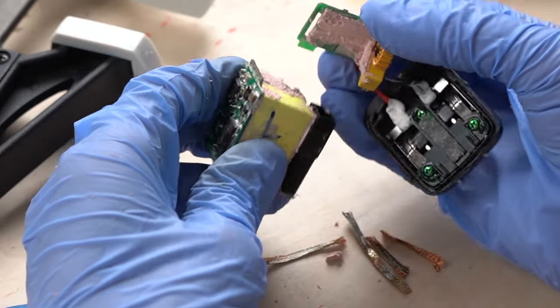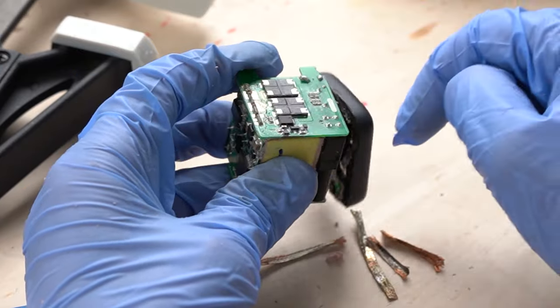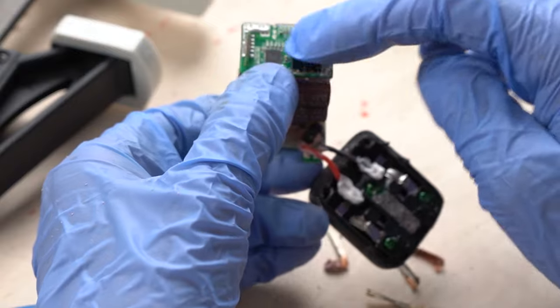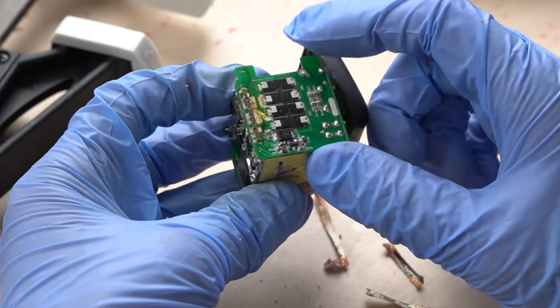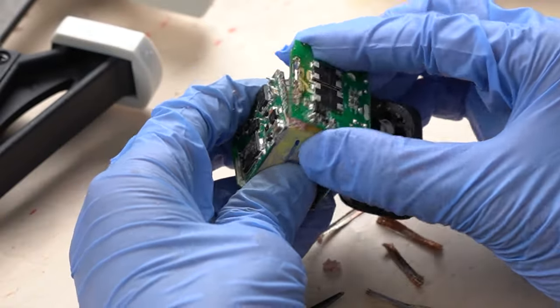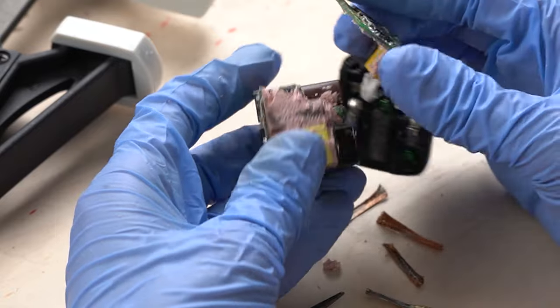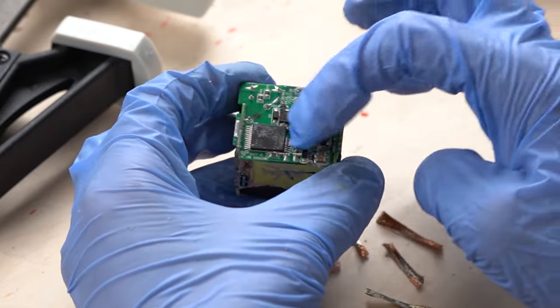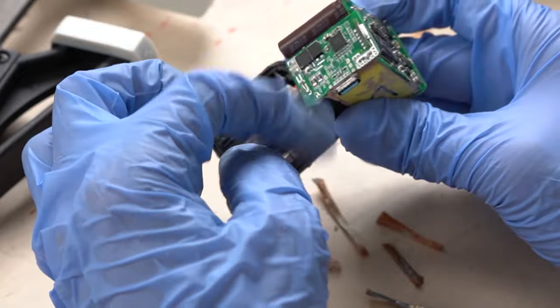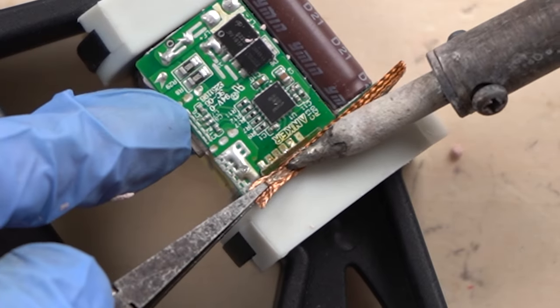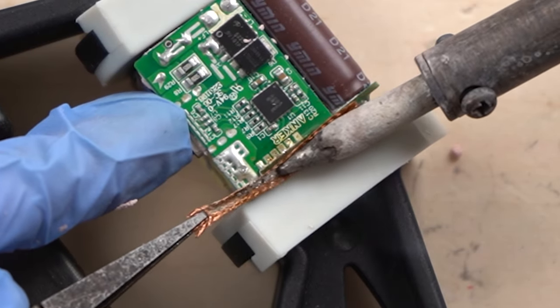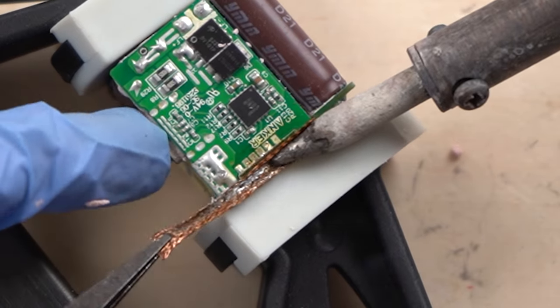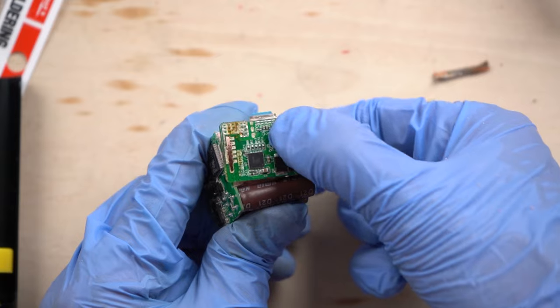I noticed something when I was removing the solder. When I applied the soldering iron here, the whole thing became very hot. Even the circuit board on the opposite side was hot. It means that the heat was transferred through the components and silicone inside to the opposite side. It came off.